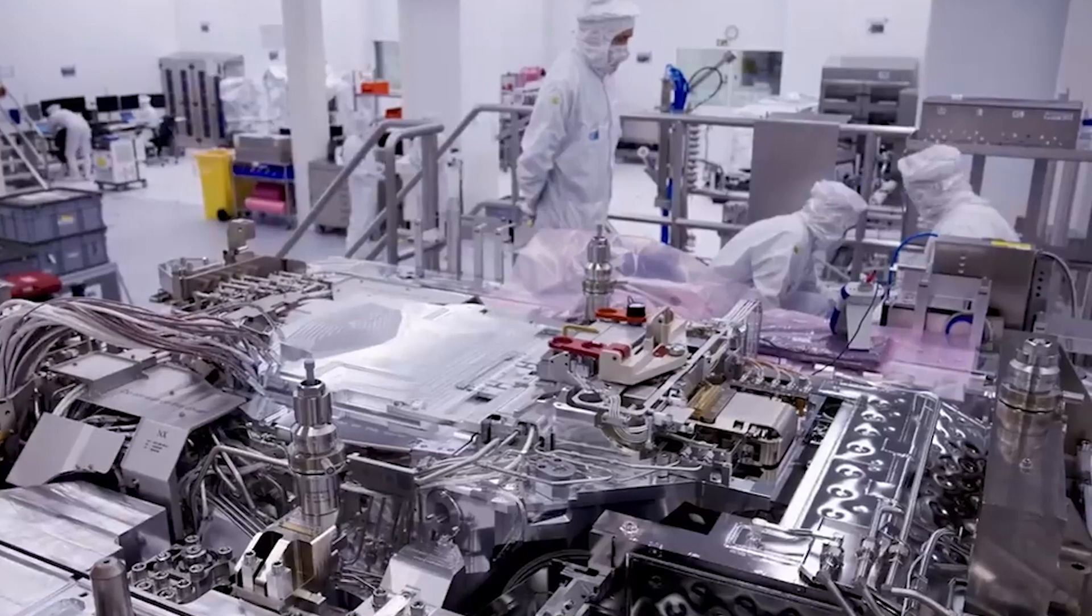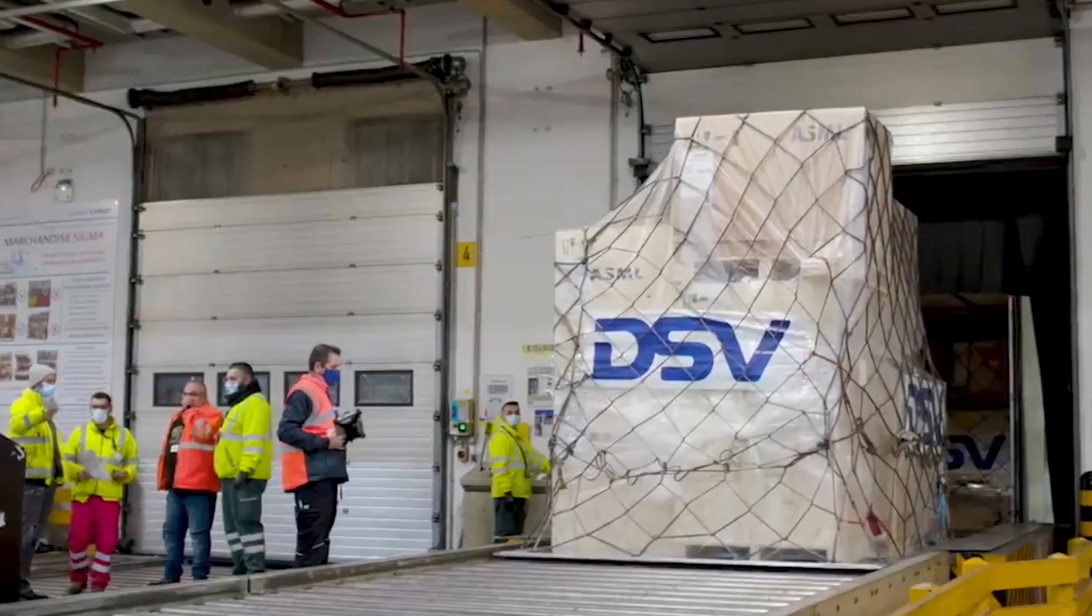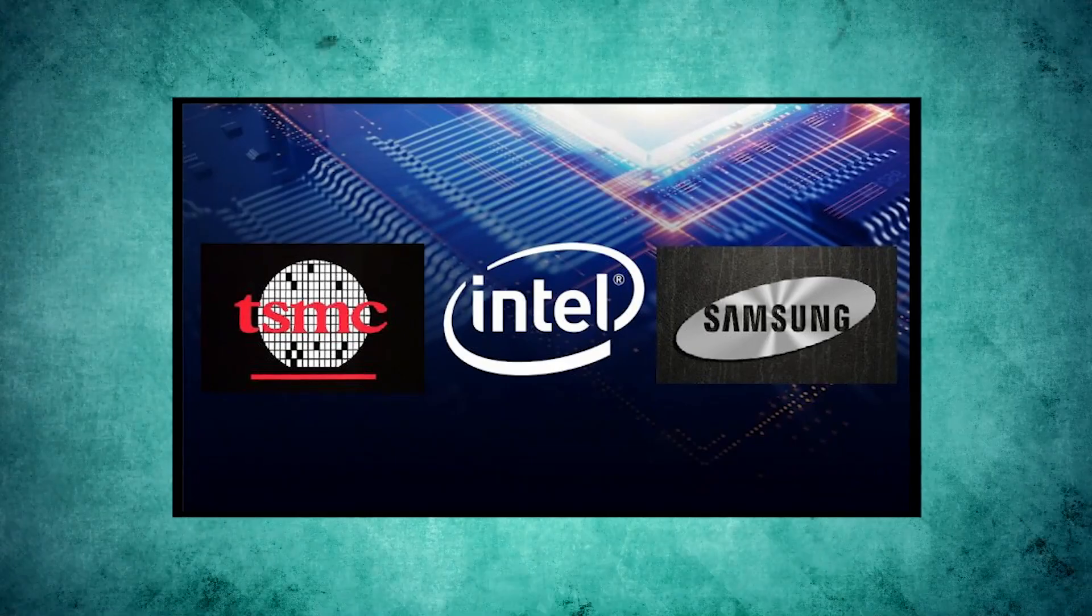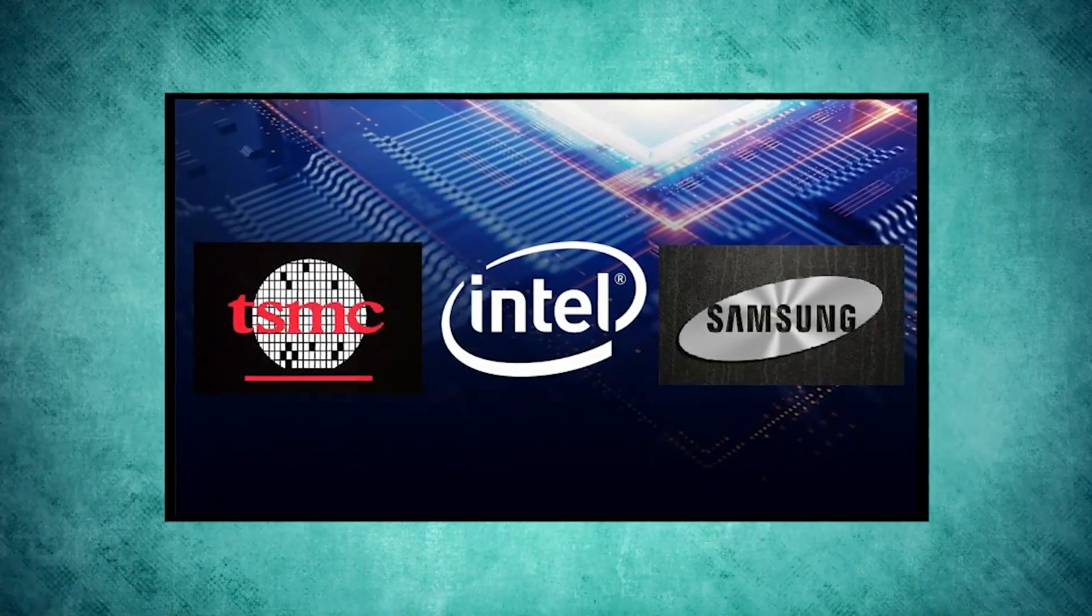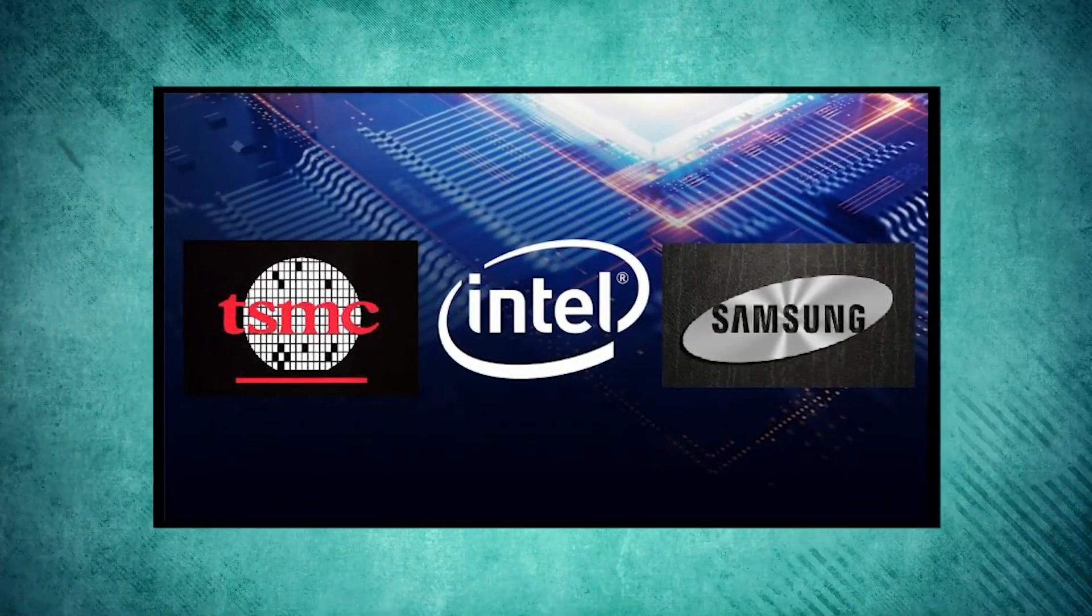Chip manufacturer Global Foundries stopped working on highly advanced chips due to their severe cost. The issue of high cost had thrown out many competitors except TSMC, Samsung, and Intel.